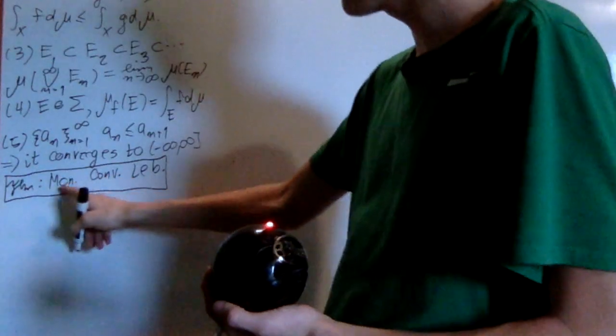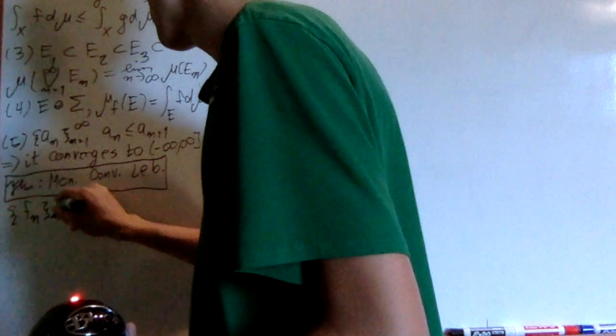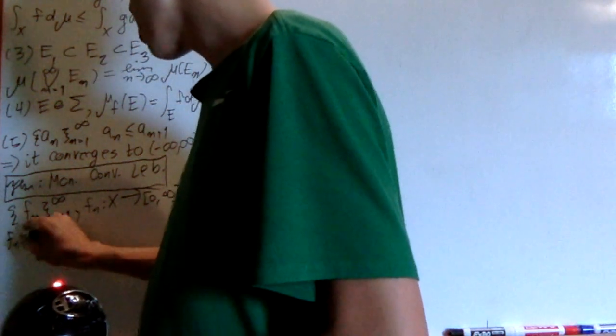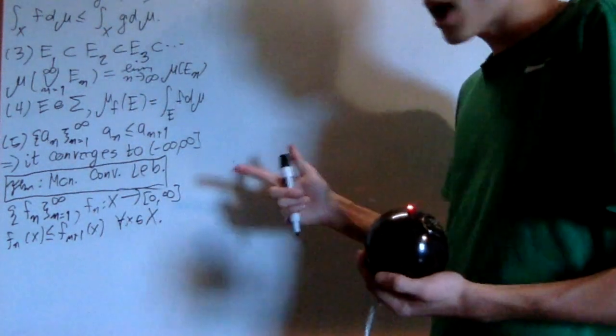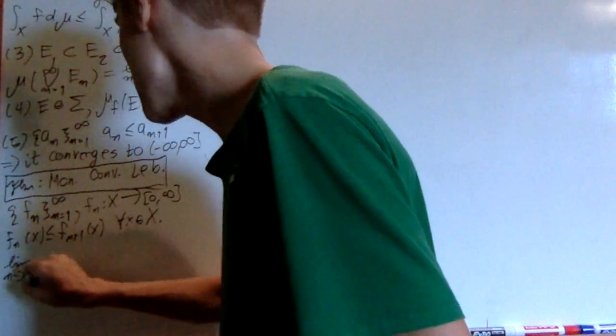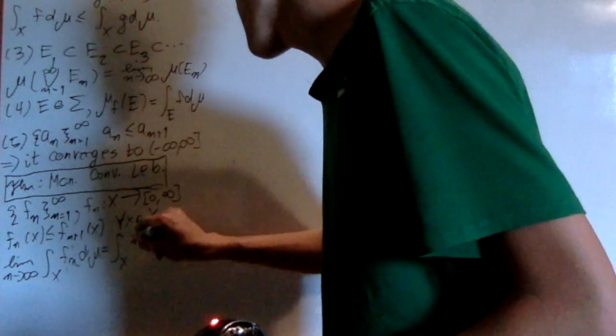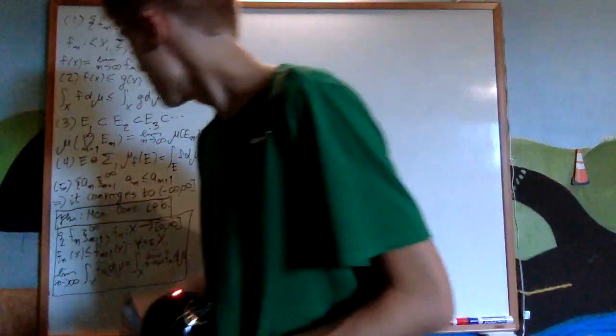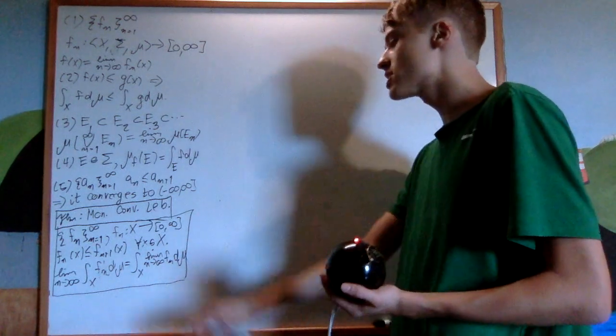Now let's state the theorem. The monotone convergence theorem for Lebesgue integrals states: if I have a sequence f_n from n equals 1 to infinity where each f_n is measurable from the measure space X into [0, ∞), and f_n(x) ≤ f_{n+1}(x) for every x in X — so it's monotonically increasing — then the limit as n goes to infinity of the integral over X of f_n dμ equals the integral over X of the pointwise limit as n goes to infinity of f_n dμ. For a monotonically increasing sequence of functions, I can exchange the limit and the integral.